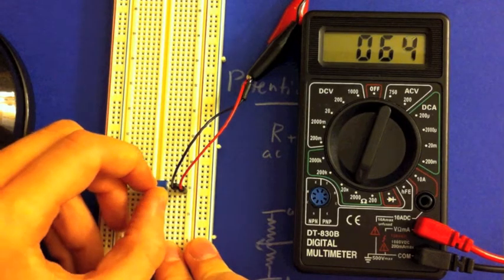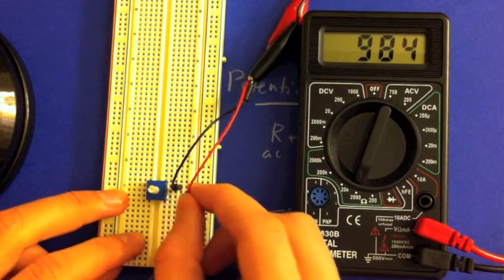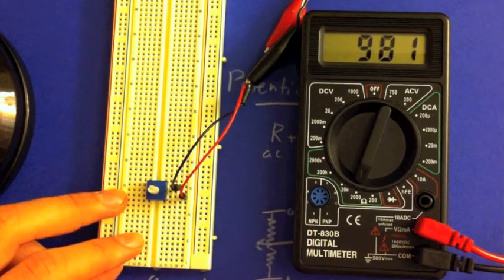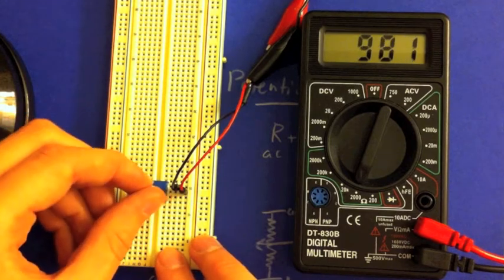If we then turn the knob, C will move from A to B, causing there to be more resistive material between A and C, and the resistance to go up to the maximum of the potentiometer, which is 980 ohms.